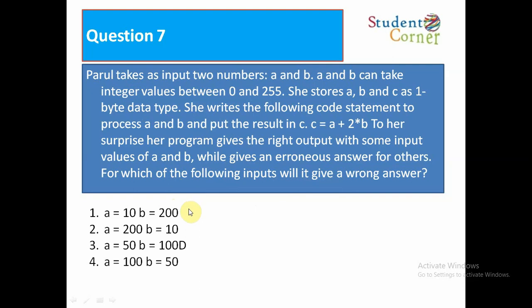Option 1: A is equal to 10 and B is equal to 200. Option 2: A is equal to 200, B is equal to 10. Option 3: A is equal to 50 and B is equal to 100D. Option 4: A is equal to 100 and B is equal to 50. The answer is A is equal to 10 and B is equal to 200.